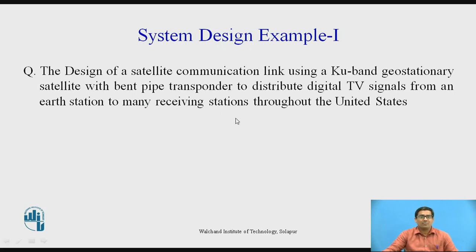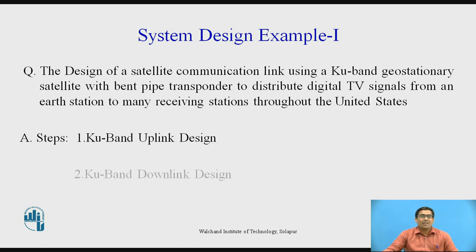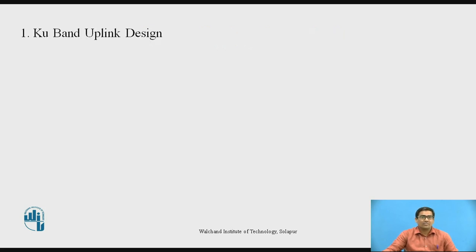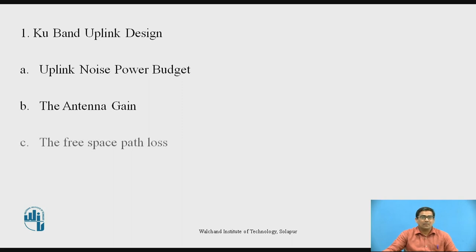Now we want to design the system. For the design of the system, there are two steps required. The first step is KU band uplink design and the second is KU band downlink design. We will see them one by one. First: KU band uplink design. For this, we require the design of the uplink noise power budget, the antenna gain, the free space path loss, and the uplink power budget.